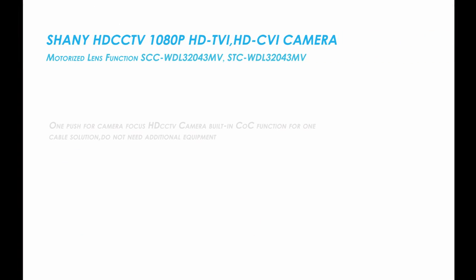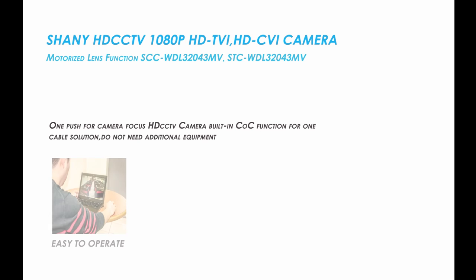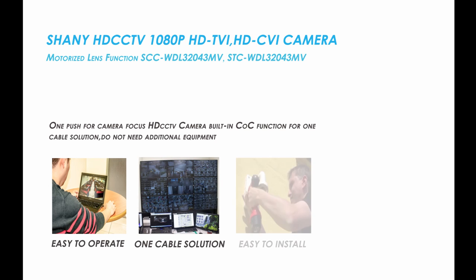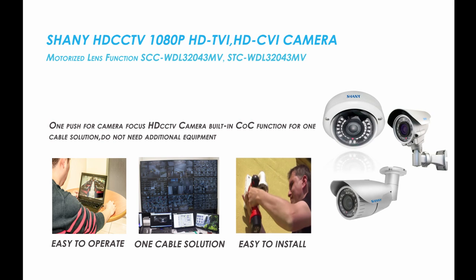Shani HD CCTV cameras — Full HD 1080p, HD TVI, CVI bullet cameras with motorized lens function and one-push camera focus. HD CCTV cameras have a built-in PLC CLC function for a one cable solution.